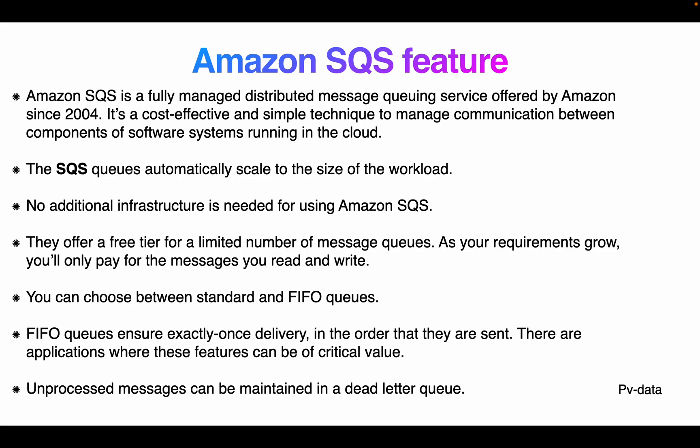Amazon SQS is a fully managed distributed message queuing service offered by Amazon. It's a cost-effective and simple technique to manage communication between components of software systems running on the cloud. SQS automatically scales and sizes workload with no additional infrastructure needed. They offer a free tier for a limited number of message queues; as your requirements grow, you only pay for the messages you read and write. You can choose between standard and FIFO queues, where FIFO ensures exactly-once delivery in order.